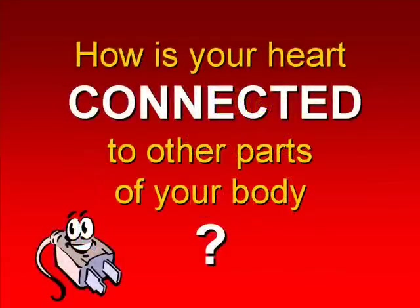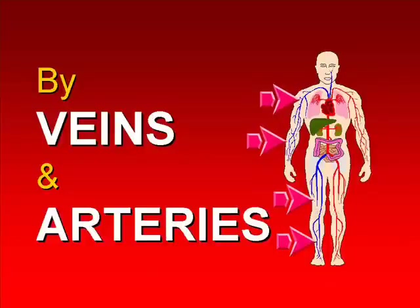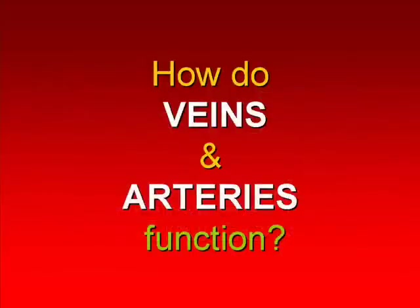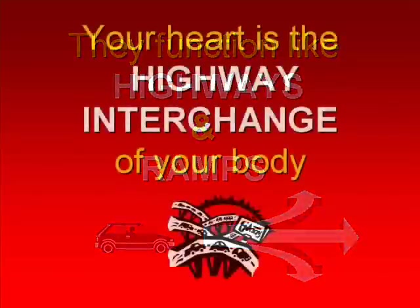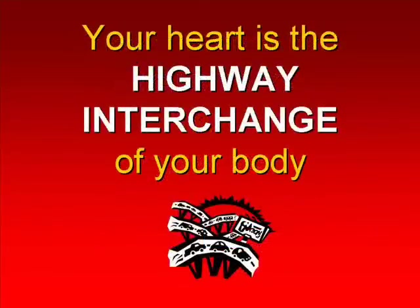How is your heart connected to other parts of your body? By veins and arteries. How do veins and arteries function? They function like highways and ramps. Your veins and arteries function like highways and ramps. Your heart is the highway interchange of your body.